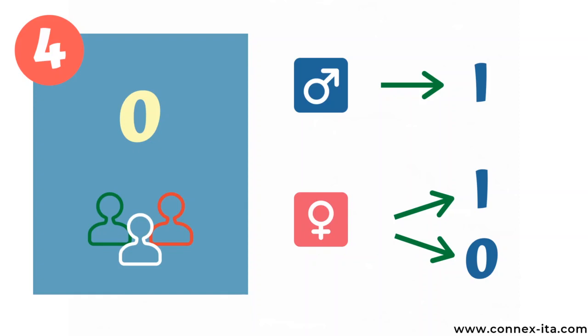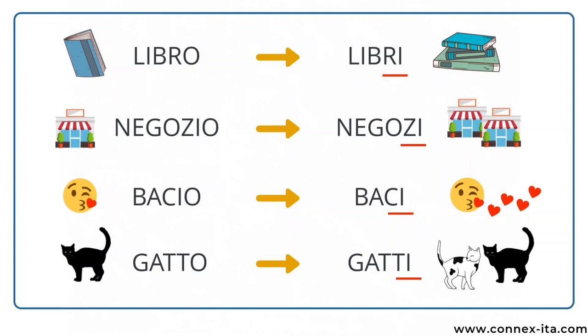The words in the next category are generally masculine and they end with the vowel O. In the plural form they change the O to an I if masculine, while feminine nouns ending in O can get an I or keep the O. Let's clarify with some examples. The following words are all masculine. Libro is 'the book' and becomes libri. Negozio means 'shop' and in the plural is negozi. Bacio is 'a kiss' and if you give many they are baci. Then gatto in the plural is gatti and means 'cat'. Libri, negozi, baci, gatti.